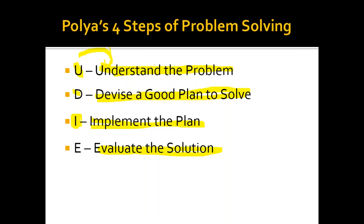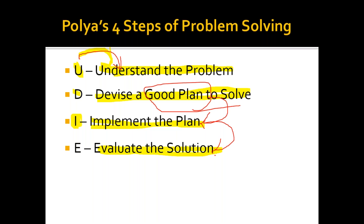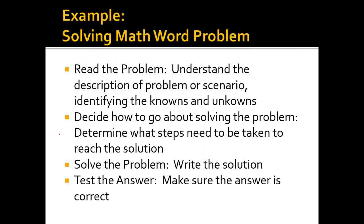After we understand the problem, we need to create a good plan. When we create a good plan, we implement it. When we implement the plan, we check the result — whether it is sufficient or not. So we have the UDIE cycle: Understand, Devise, Implement, Evaluate. For example, read the problem to fully understand the description or scenario and the types of the problem.